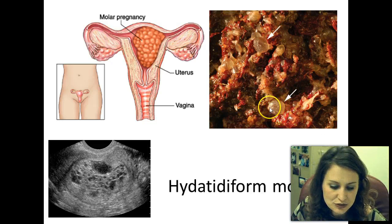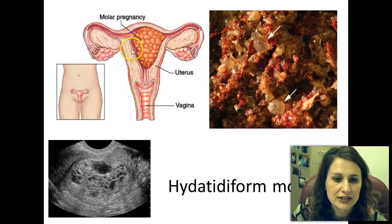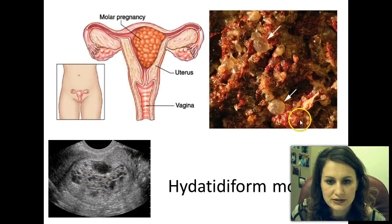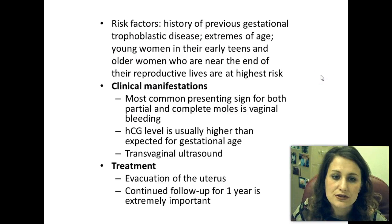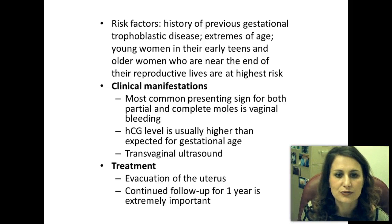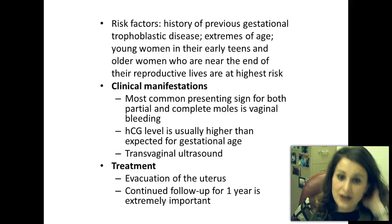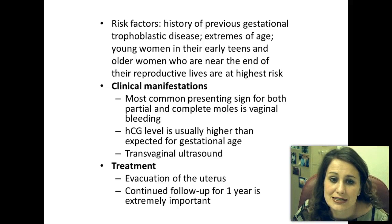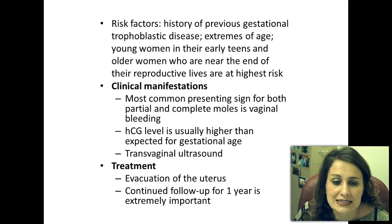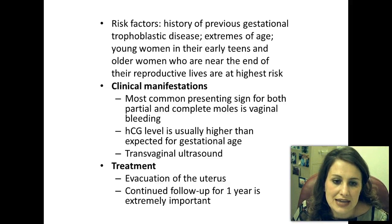A picture shows grape-like clusters (vesicles) inside the uterus representing a molar pregnancy, and this is also what it looks like on ultrasound. Risk factors: a history of previous gestational trophoblastic disease increases risk, though that risk is very small. Molar pregnancies typically occur at extremes of reproductive age—very young women in their early teens and older women near the end of their reproductive lives are at highest risk.